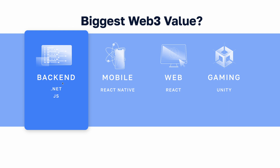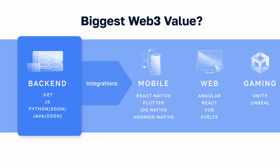What Morales 2.0 really means is that we double down on our backend. We create more backend SDKs — for example, for Python, for Java, for Go, for Rust. And then we do integrations to unlock all of the different SDKs for mobile, for web, for gaming, which will ensure that Web3 is very easy to get onboarded to if you are a Web2 developer.